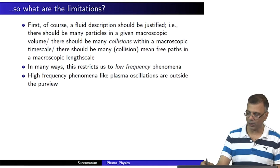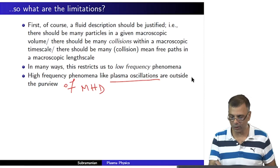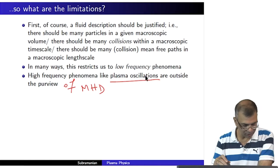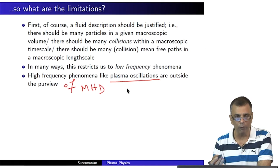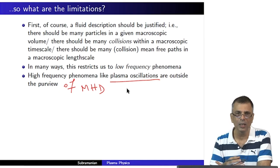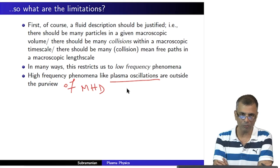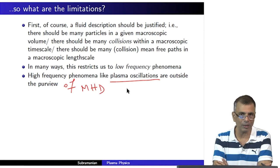This restricts us to low-frequency phenomena. High-frequency phenomena like plasma oscillations are outside the purview of MHD. Consider a fluid of electrons and protons: protons are about 2000 times more massive than electrons, so essentially any mobility should be assigned only to the electrons. Electrons are almost infinitely mobile whereas the protons are just sitting in place.